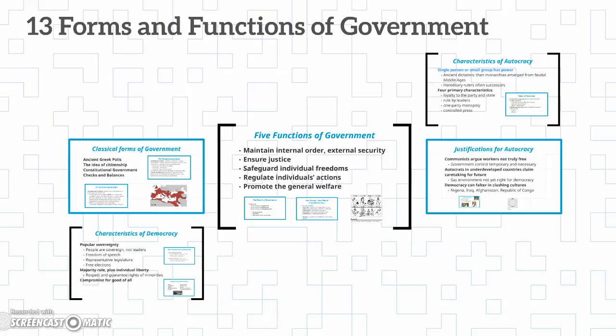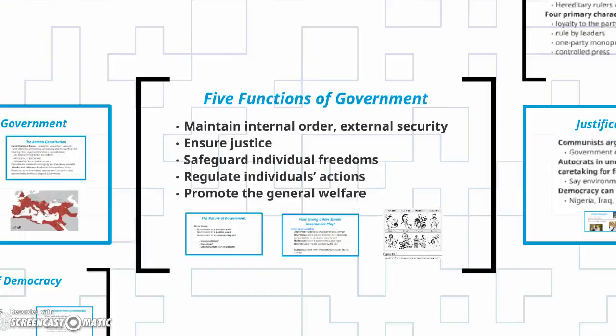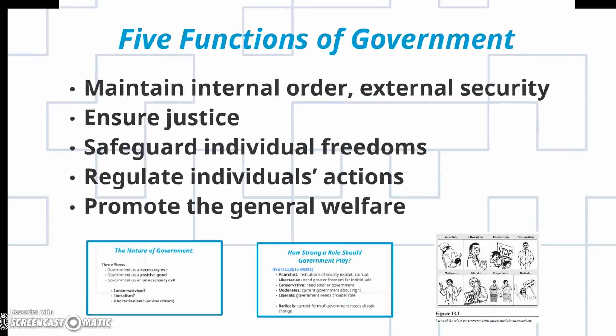Let's begin talking about the forms and functions of government. There are five major purposes for government. The first one is to maintain internal order and external security. External security right now is a big topic with lots of illegal immigration, and we have the war on terror in many parts of the world. Maintaining internal order can also include illegal immigration, frequent shootings — school shootings, movie theater shootings — and crime. This is one of the major functions of government. Another one is to ensure justice.